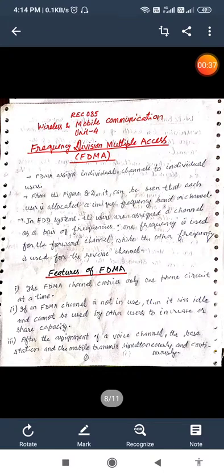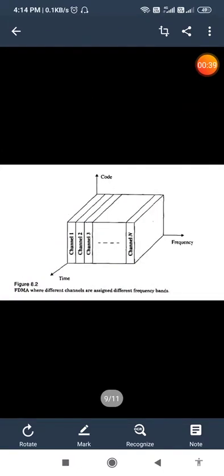Now, see this figure. Here we can say that in frequency we have assigned different channels, channel 1 to channel n. Here this is the time division, this is the frequency division, this is the code division. So here the frequency is divided. This is clear from this figure. From this figure it is clear that each user is allocated a unique frequency band or channel.